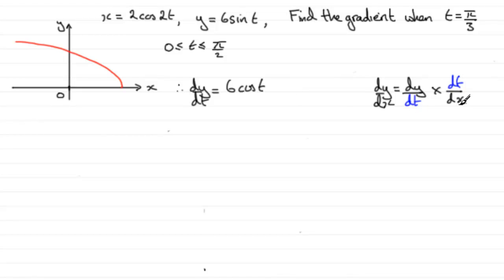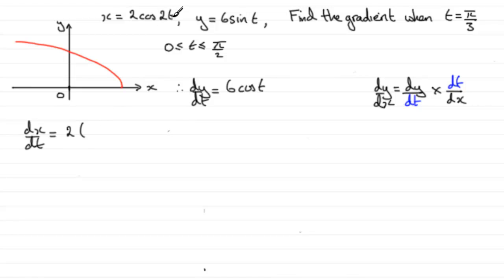For dt/dx, we differentiate x with respect to t to find dx/dt, and then take the reciprocal. For dx/dt, it's going to be 2 multiplied by the differential of cos2t. Using the chain rule, the differential of cos2t is minus sine of 2t, times the differential of 2t, which is 2. So dx/dt equals minus 4sin2t.